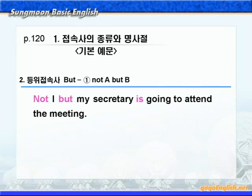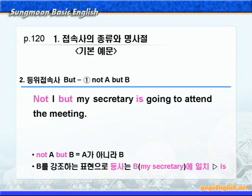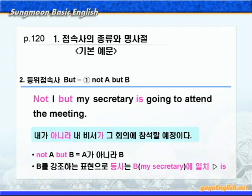다음 이번에는 등위접속사 but에 대해서 알아보겠습니다. 먼저 1번 'not A but B' 구문을 살펴보죠. 'Not A but B'는 A가 아니라 B 이런 뜻이죠. B를 강조하는 표현이니까 동사는 B에 일치시켜야 하겠습니다. 그래서 B에 해당하는 my secretary에 일치시켜서 동사가 is가 된 것입니다. 해석을 해보면 '내가 아니라 내 비서가 그 회의에 참석할 예정이다' 이런 뜻이죠.